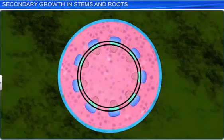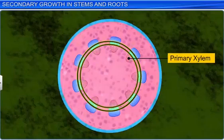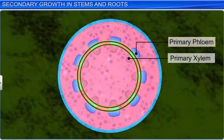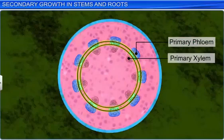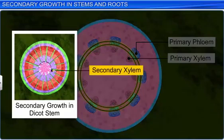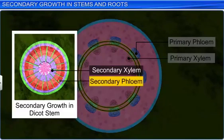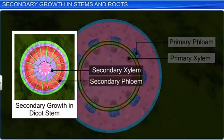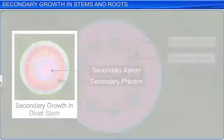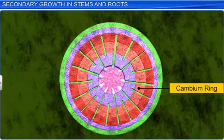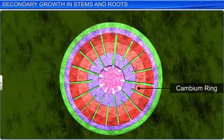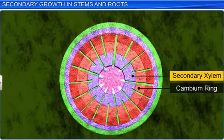At this stage, the cambium ring has primary xylem on its inner surface and primary phloem on its outer surface. Cell division takes place on both sides of the cambial ring, and results in the formation of secondary xylem on the inner surface and secondary phloem on the outer surface. Since the cambium is more active on the inner side, the formation of secondary xylem is more than secondary phloem.